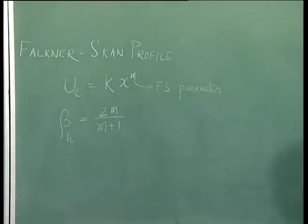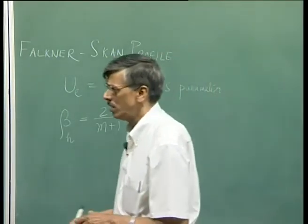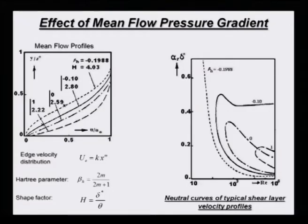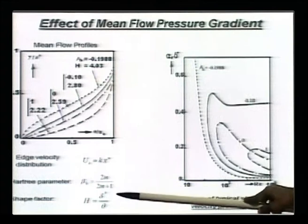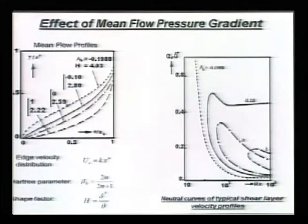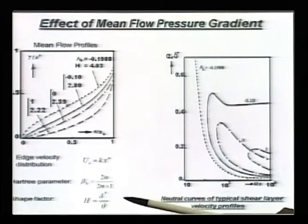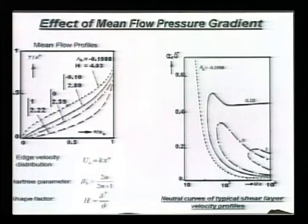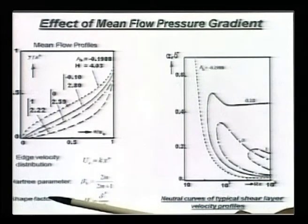Lots of work have been done, and Hartree specifically notes that what is of interest is the parameter beta_h, the Hartree parameter, which is equal to 2m divided by m plus 1. When the boundary layer develops in a shear layer, there are two thicknesses of interest: the displacement thickness delta star and the momentum thickness. One gives an estimate for mass displacement or defect due to the boundary layer, and the other gives the momentum deficit.